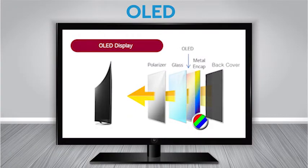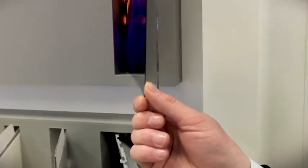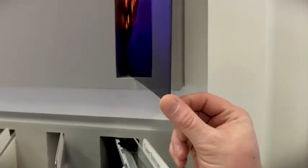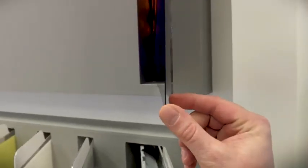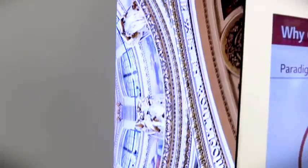OLED, which stands for organic light-emitting diode, is a much more simple design that doesn't use an LCD panel. Instead, OLEDs produce their own light and colors. That's why you will sometimes hear OLED referred to as an emissive display.